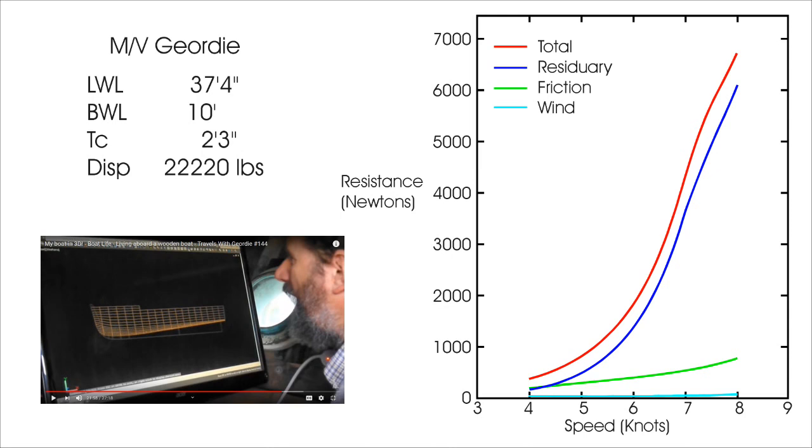Now, let's apply this method to a boat that is currently being repowered. That is MV Geordie, which belongs to Peter Knowles, who has the YouTube page Travels with Geordie. Here are some of the parameters on his boat. Water line length of 37 feet 4 inches. Beam at the water line of 10 feet. Draft of the boat exclusive of the keel 2 feet 3 inches. And, displacement of 22,200 pounds. Now, Peter supplied me this data from his lines drawing. And, that's him looking at the lines drawing he made of his boat down below. I used that using the methods I outlined in the second video in this series to calculate the resistance for Peter's boat.